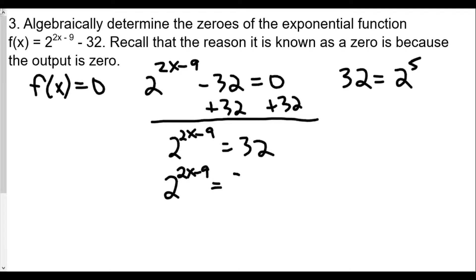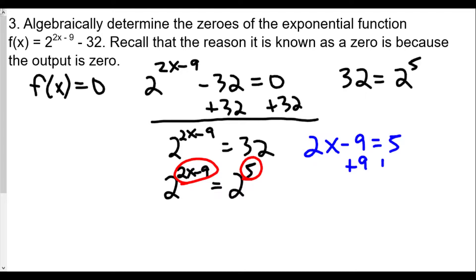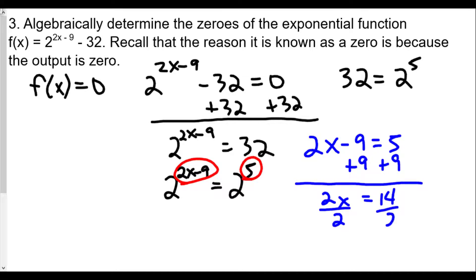Our equation is now 2 to the (2x minus 9) equals 2 to the 5th. Since the bases are equal, we set the exponents equal: 2x minus 9 equals 5. Adding 9 to both sides, 2x equals 14, so x equals 7. The zero of this function is x equals 7. Checking: 2 times 7 is 14, minus 9 is 5, and 2 to the 5th power is 32, so 32 minus 32 equals zero — confirmed.